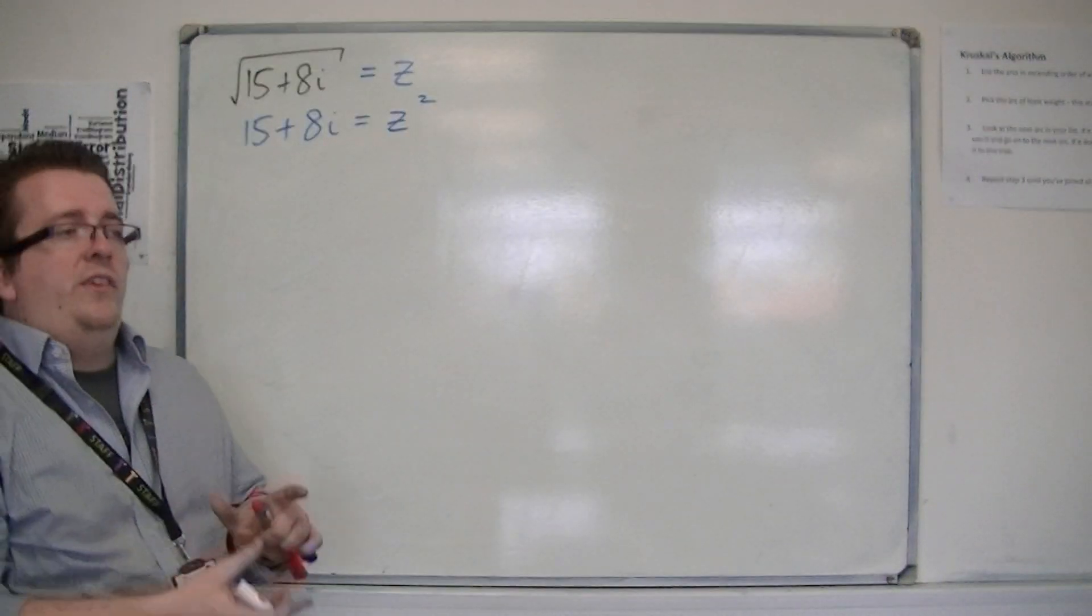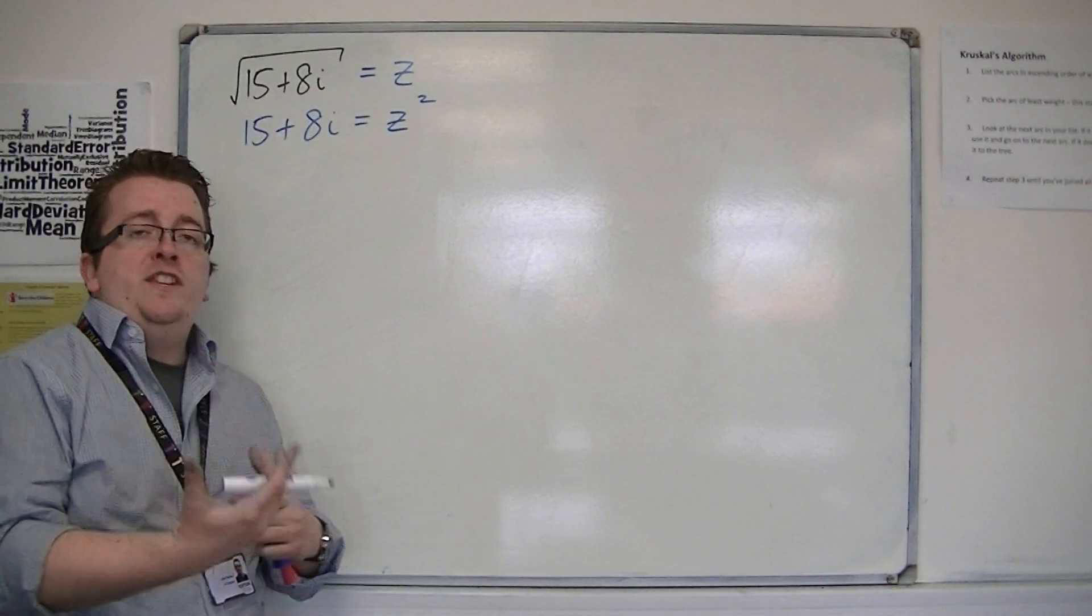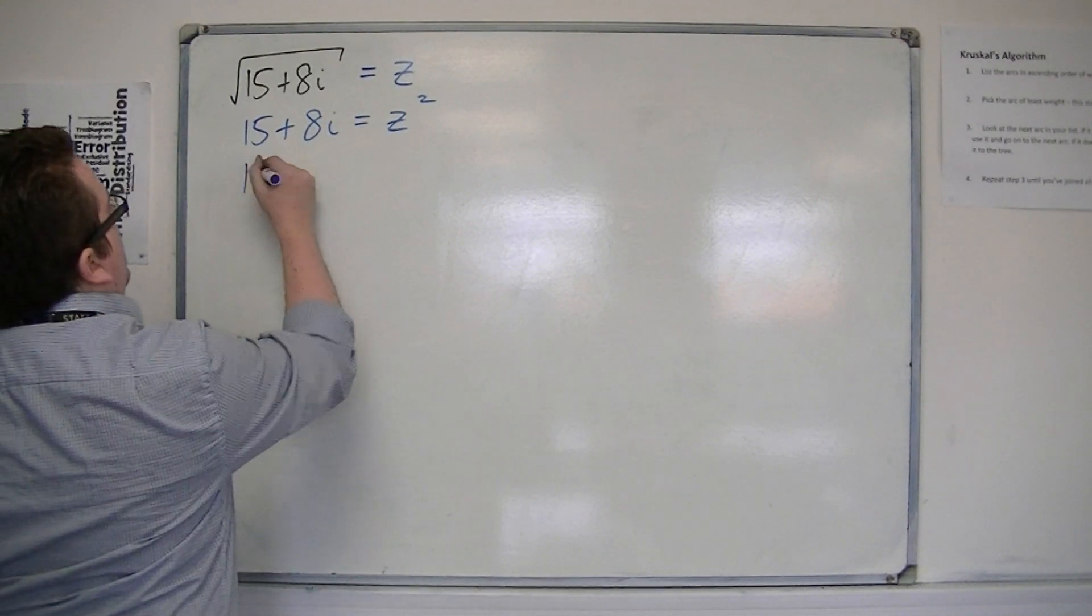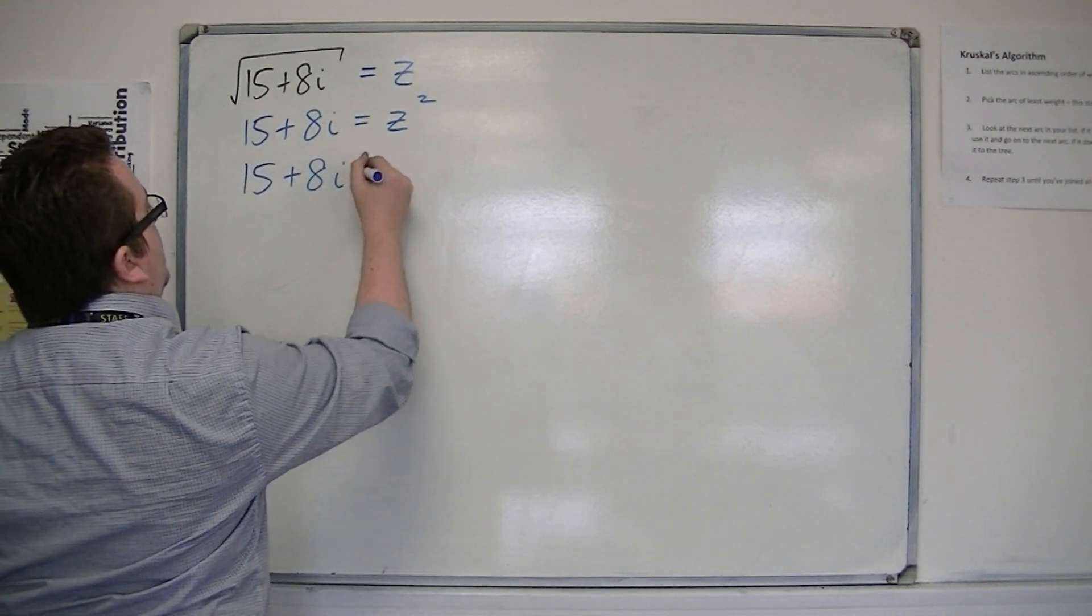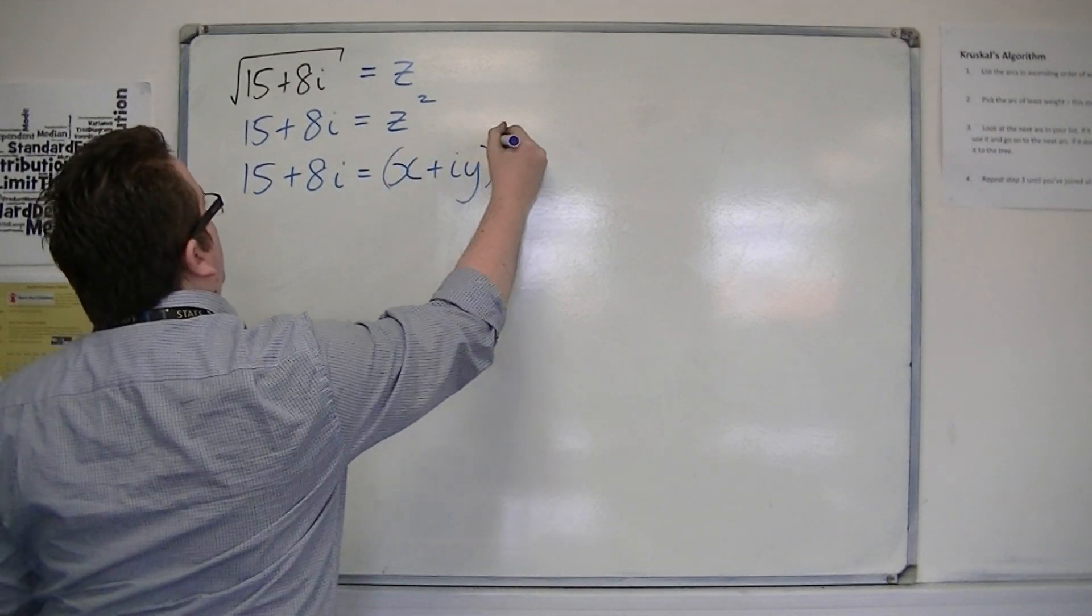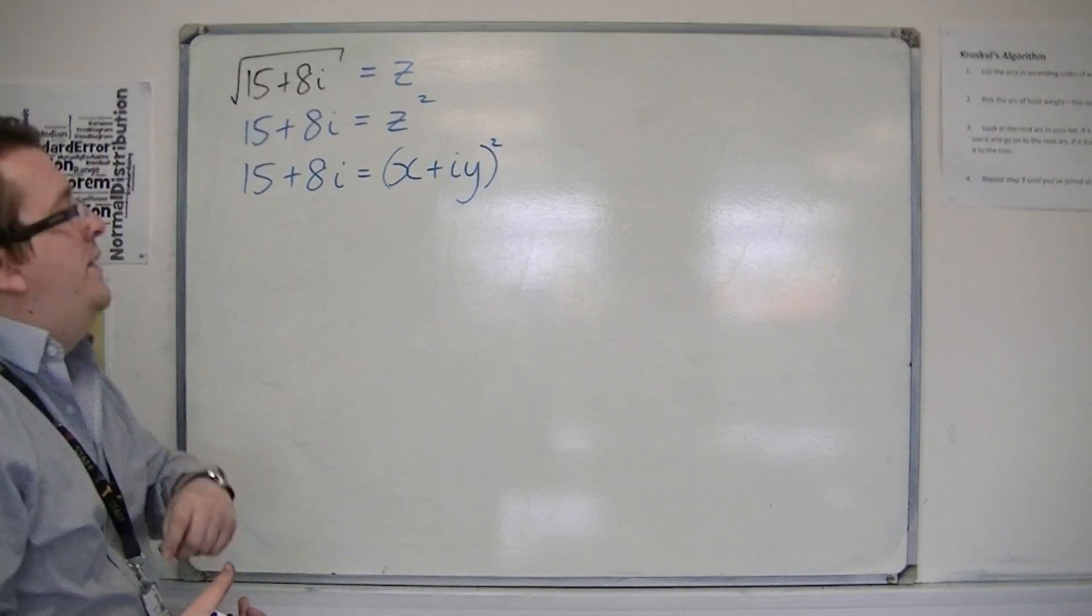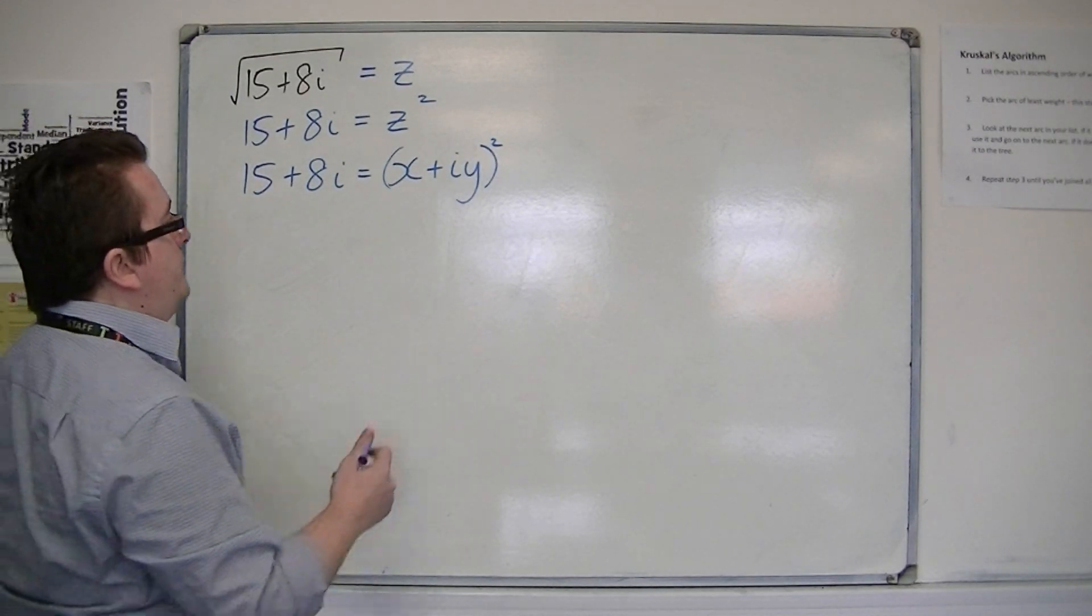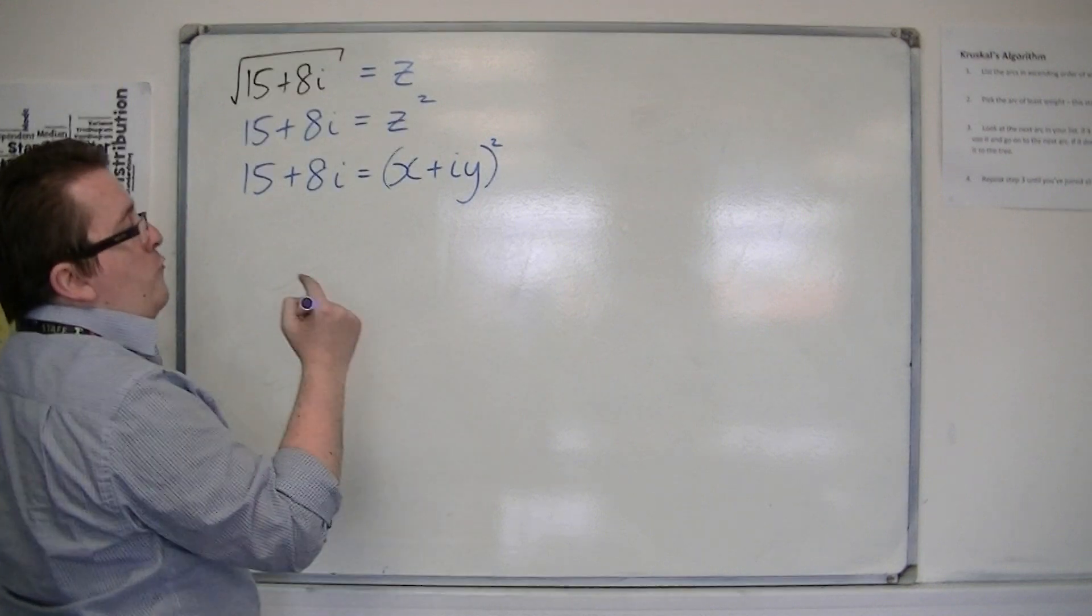Now if I give z a generic complex number form, then I could say that 15 plus 8i is the same as x plus iy squared. So that's what I'm going to work with, this x plus iy squared, and I'm going to find the value of x and y, where x and y are real numbers.